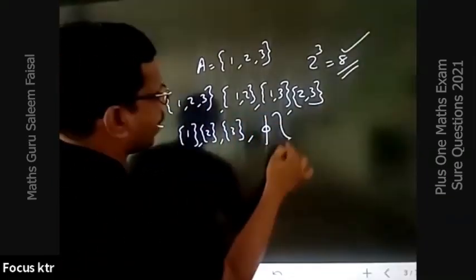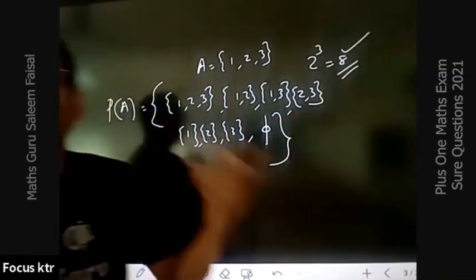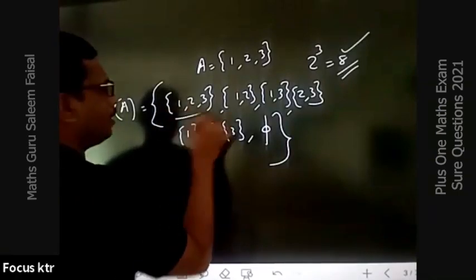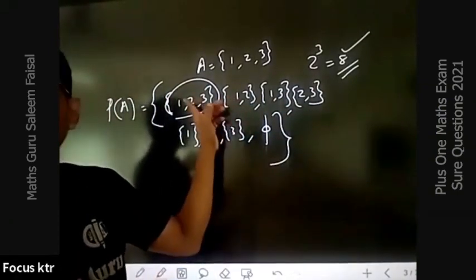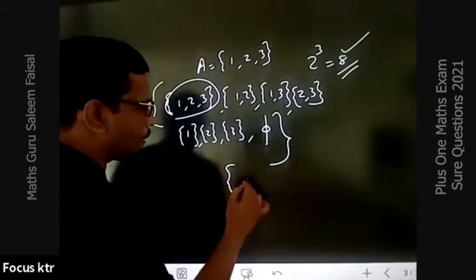So here are the subsets. If you take all of these subsets together, it's called the power set of A. How do you call it as a proper subset? Just a question about the subset.